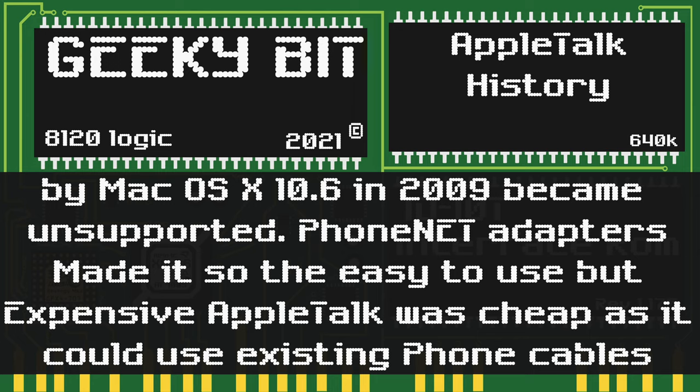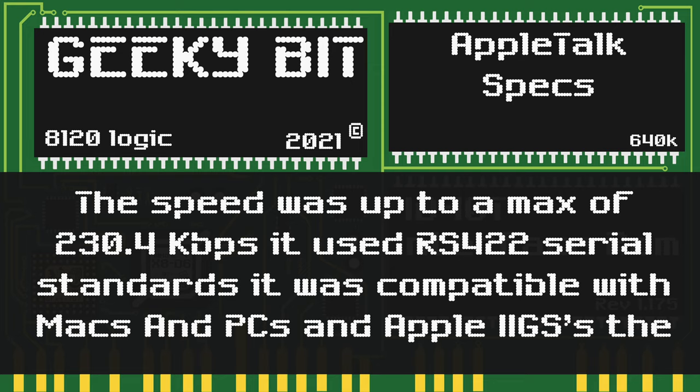PhoneNet adapters made it so the easy-to-use network standard's expensive connectors were cheap and could be used with existing phone cables. Early AppleTalk network speeds capped out at 230 kilobits per second as it used the RS422 serial standard.